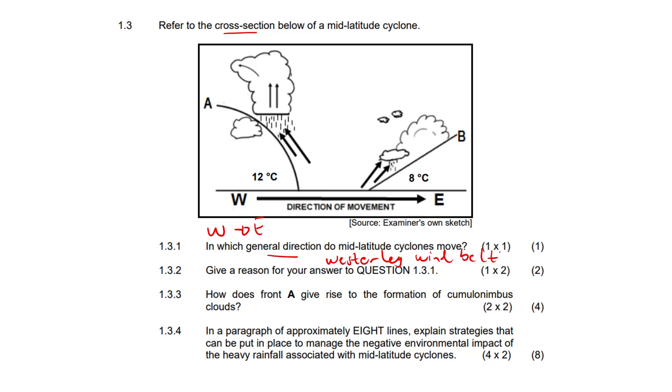They often develop this very distinctive flat anvil-shaped top. So for 1.3.3, to answer the question, a cold front will undercut the warm air, or alternatively cooling and condensation occurs.